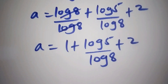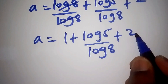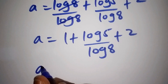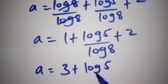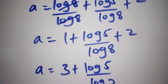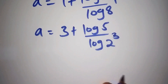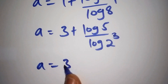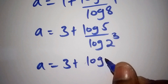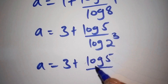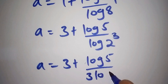From here, 2 plus 1 is 3, so A equals 3 plus log 5 over log 8. The log of 8 can also be written as log of 2 to the power of 3, which equals 3 log 2. So finally our value for A is 3 plus log 5 over 3 log 2.